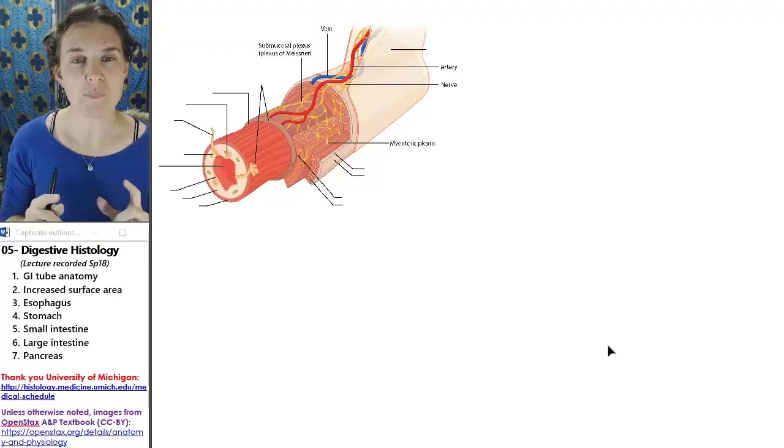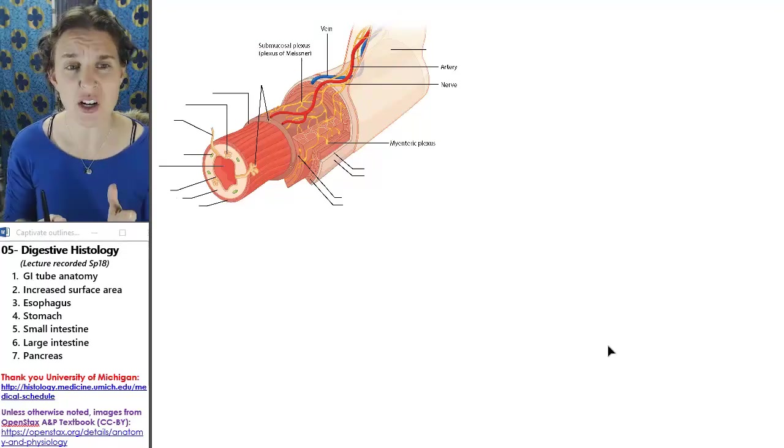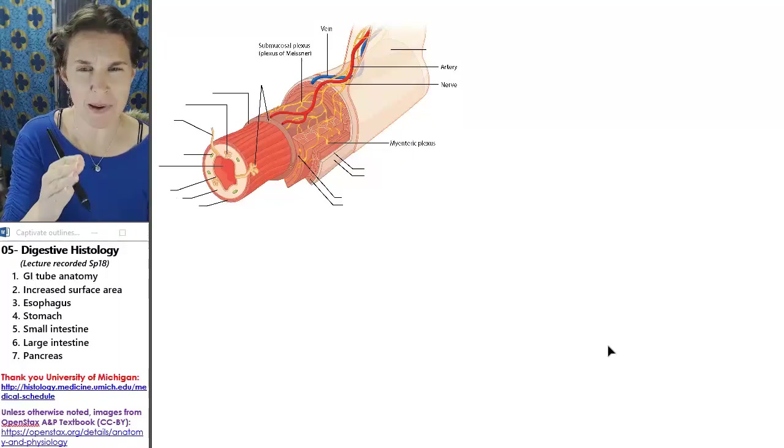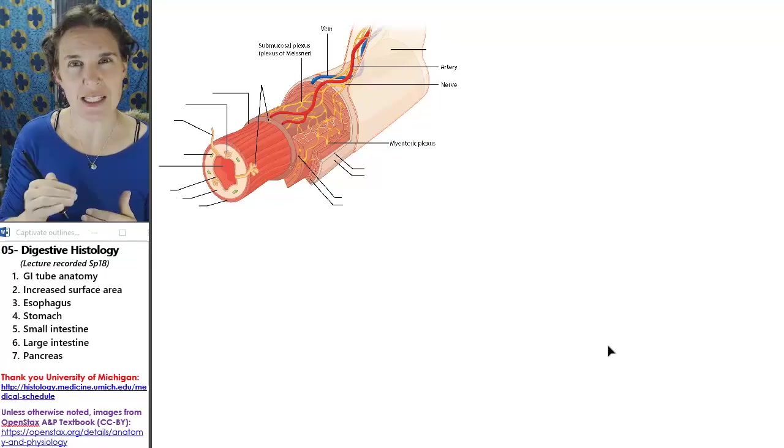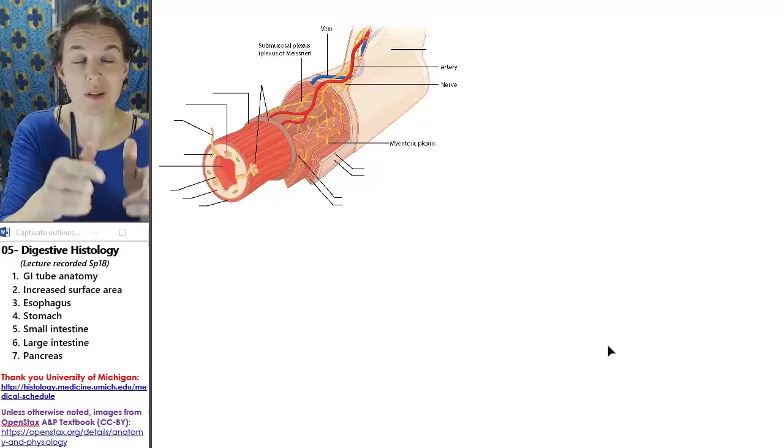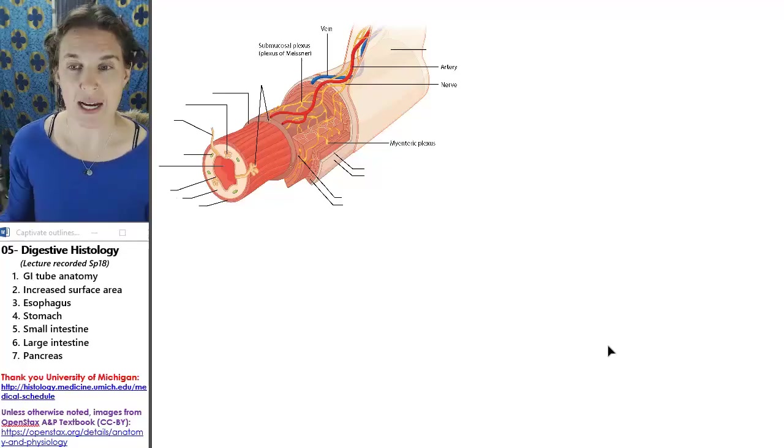There's lots of really cool hints about where you are when you're looking at the histology of the digestive tubing, and there's also some really cool similarities between all parts of the tube. So I'm going to start by drawing a picture of a generalized tube for you, and then we'll correlate the layers to this image from the OpenStax textbook.